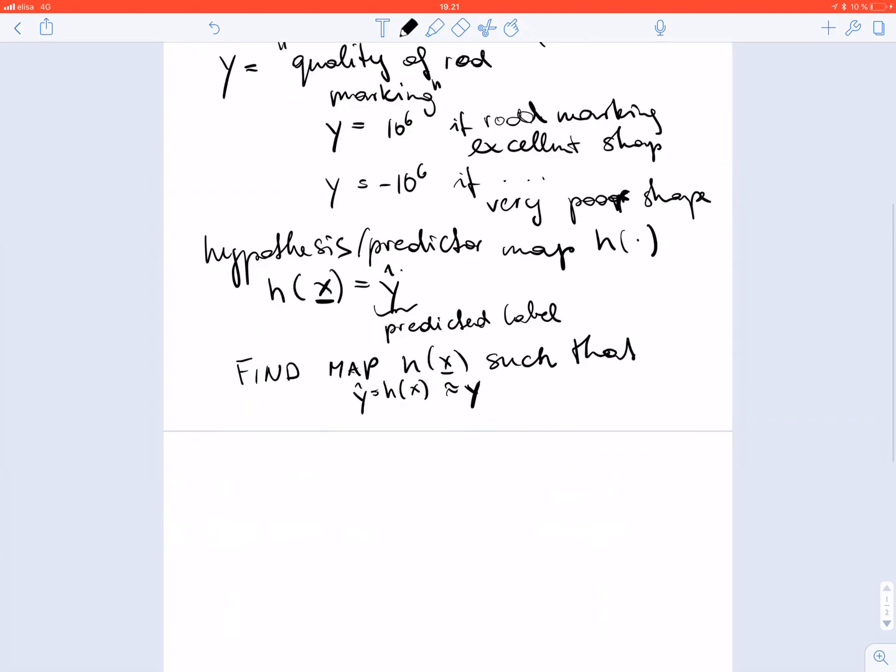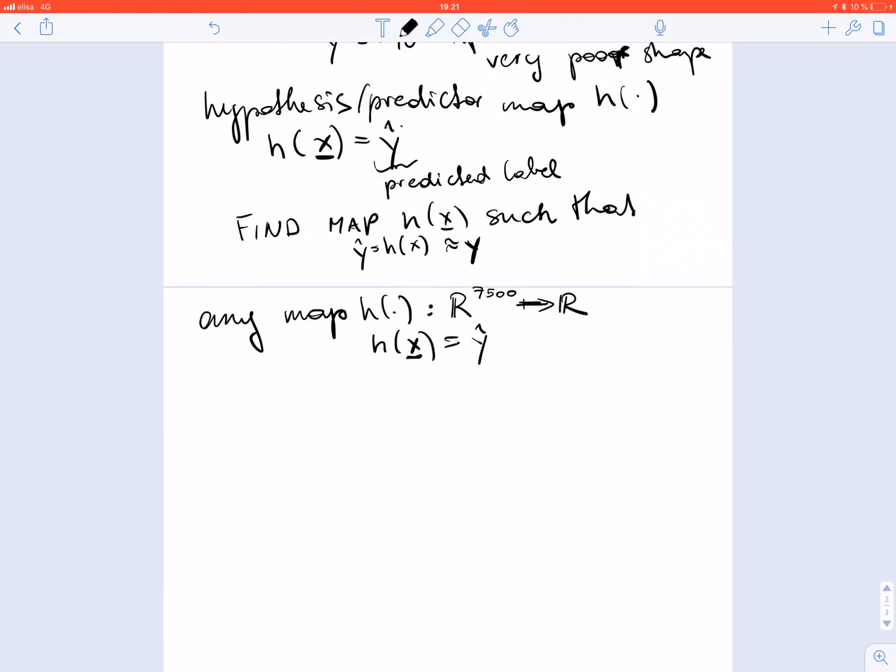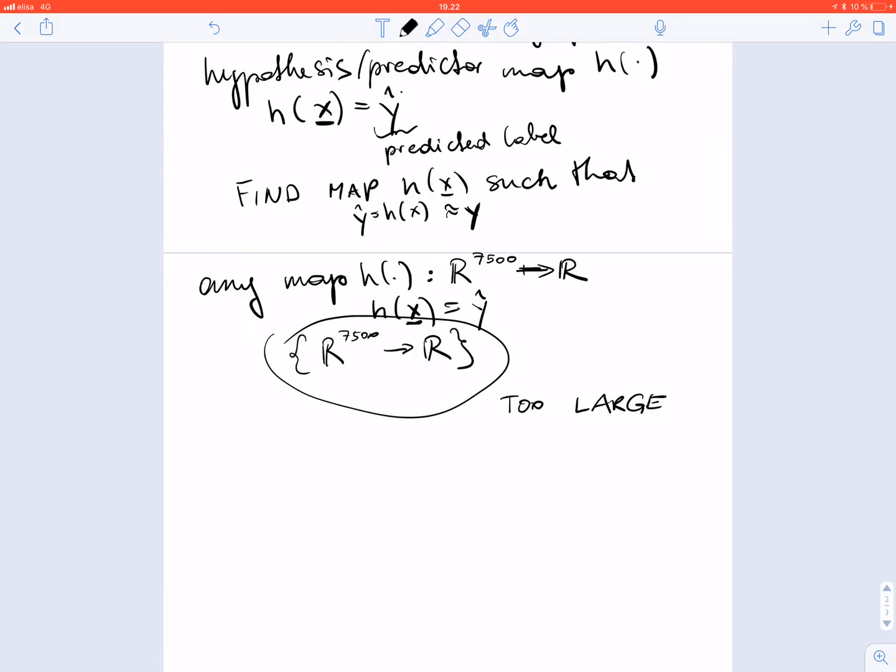Formally we can use any map that maps the set of all feature vectors, which is the set of real valued vectors of length 7500, to a real number which is the predicted label. However, for computational reasons we have to restrict the set of maps that we consider because the space of all real valued mappings from feature vectors of length 7500 to a real number is simply too large, way too large. We cannot handle this with finite resources, finite computational resources, finite time or finite amount of memory.